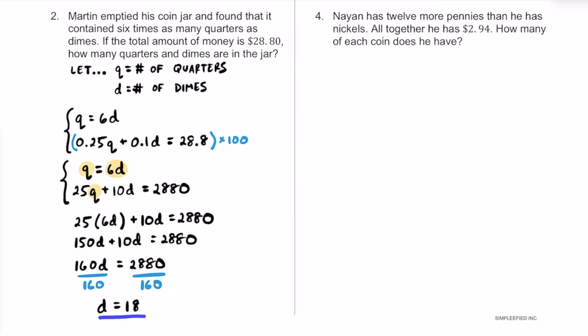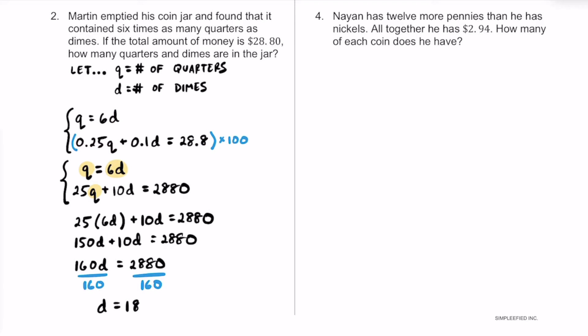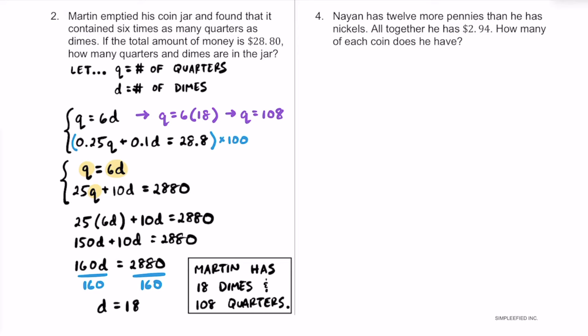We know there are 18 dimes. We can substitute that back into the top equation to solve for the number of quarters: Q equals 6 times 18, so Q equals 108. Martin has 18 dimes and 108 quarters.